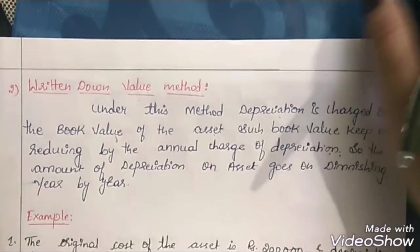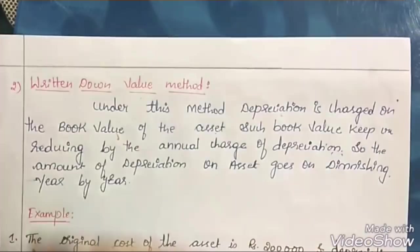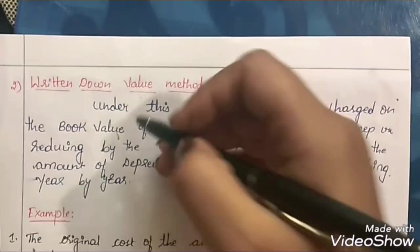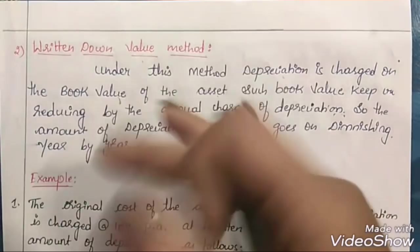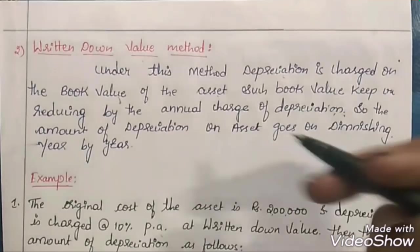In straight line method, depreciation is charged on the original cost — the amount is the same for all years. In written down value method, it is charged on the book value, and the amount goes on diminishing every year. Hence, this method is also known as diminishing balance method. In an examination, it may be asked as either written down value method or diminishing balance method — both are the same.